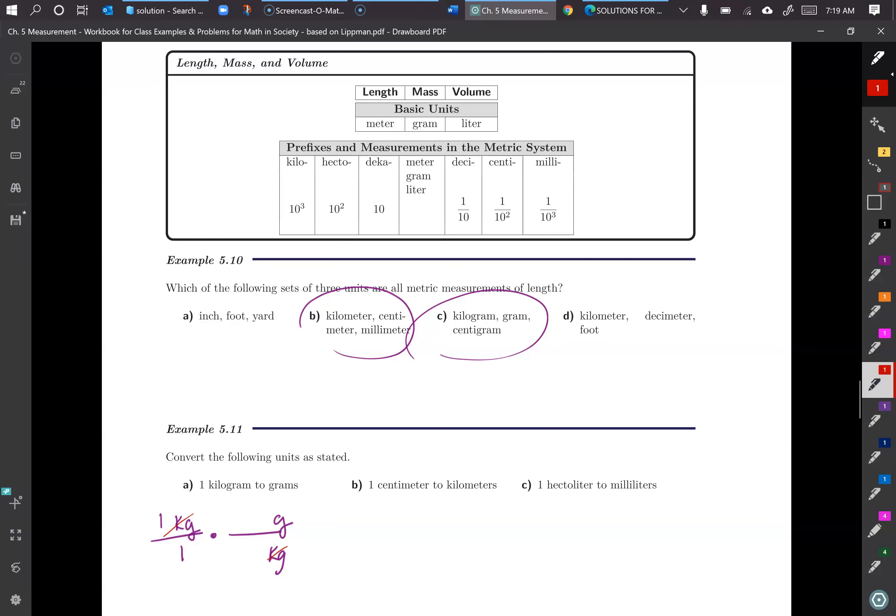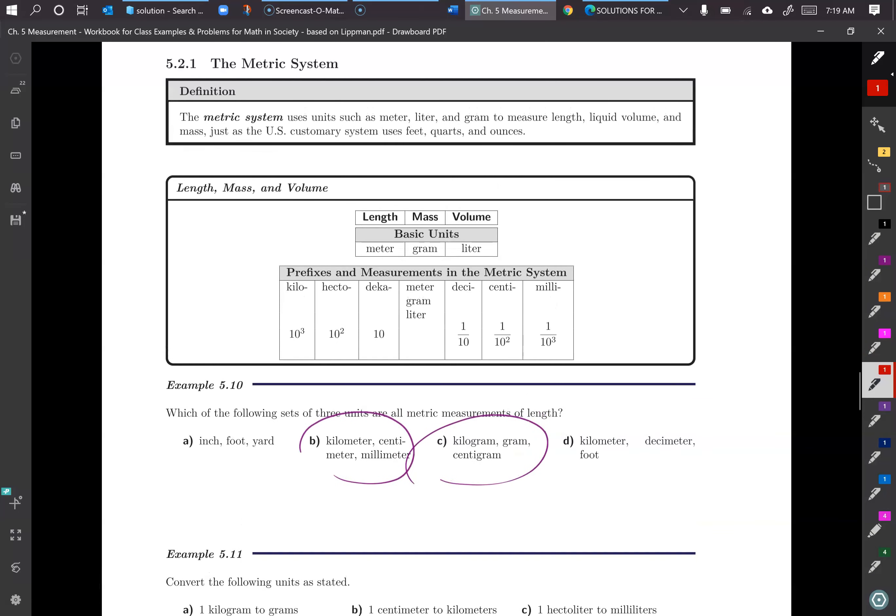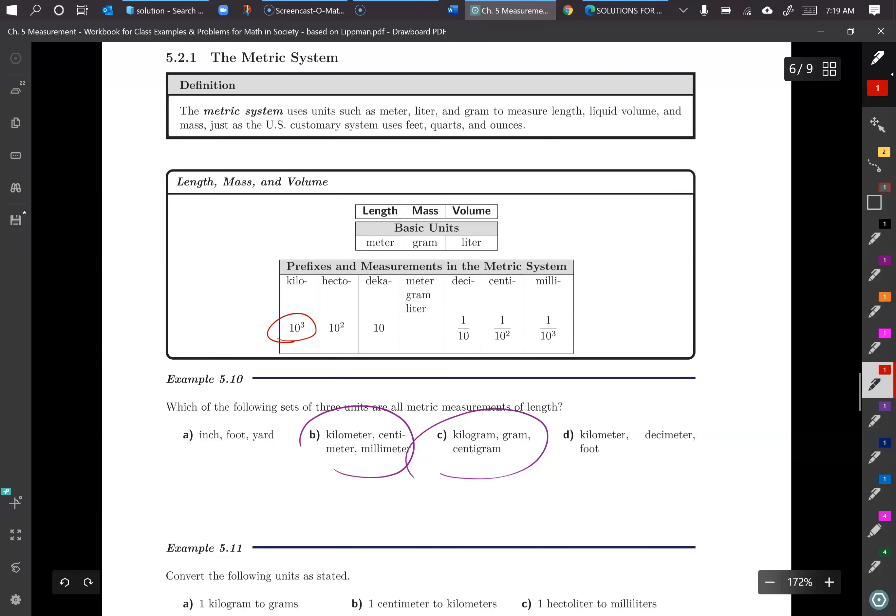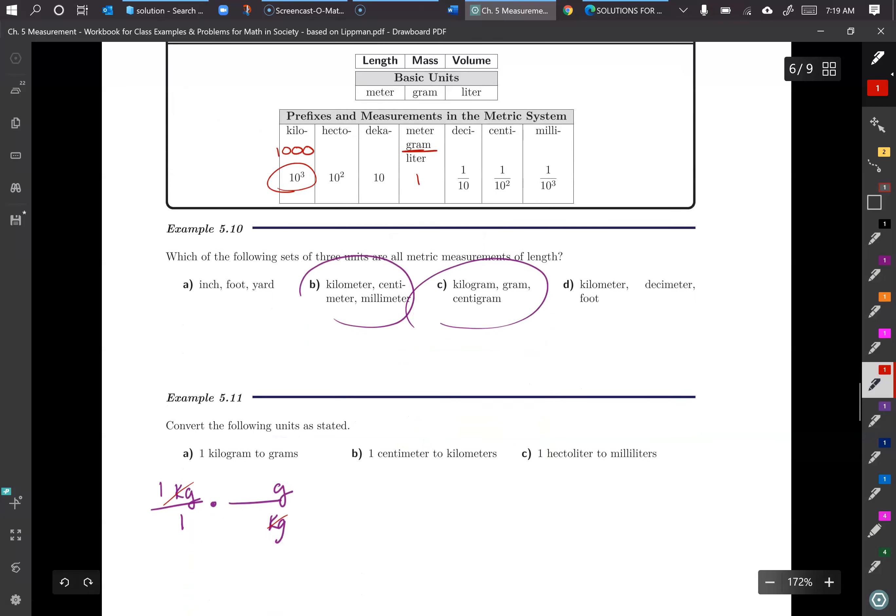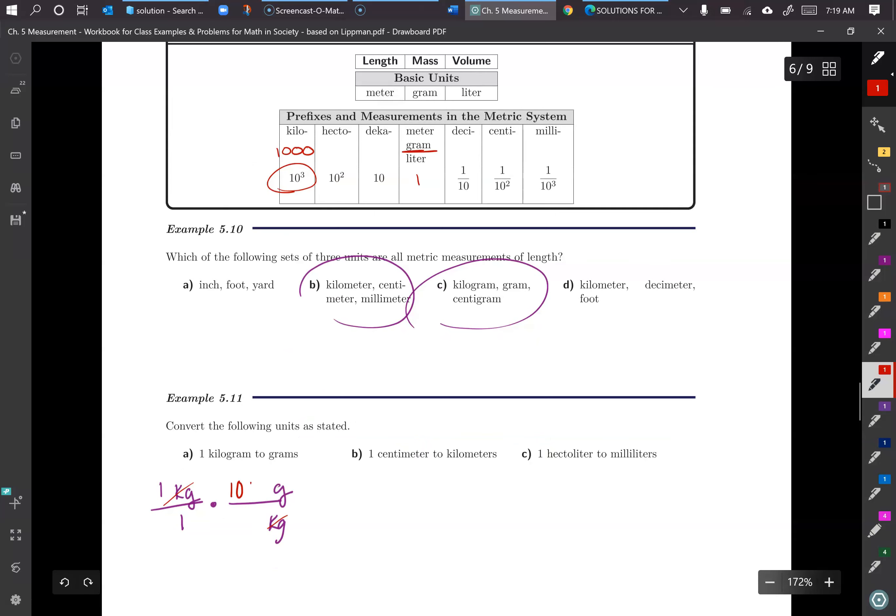And I want my units to cross out on the diagonal. So I have to think how many grams are in a kilogram. So I can look up here and see my equivalency kilo is 10 cubed, which is a thousand. So we have a thousand grams to one kilogram. And then again, multiply across the top and multiply across the bottom. So I end up getting a thousand grams because my kilograms just cancel. And then I have a one in the denominator.